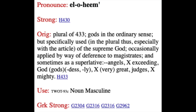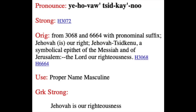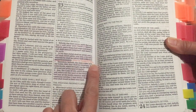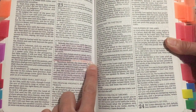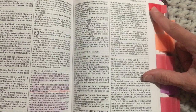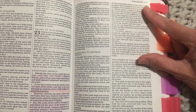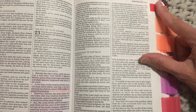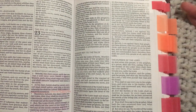In Jeremiah 23 verse 6, it says 'the Lord our righteousness,' so the term for that is Jehovah Tsidkenu. The other place you see it is Jeremiah 33 verse 16, so I wrote that as another spot but only put a tab on the first one to avoid it being too overwhelming when going through the names of God.